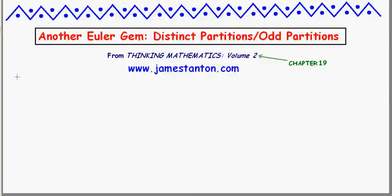G'day. In 1740, French mathematician Naudet wrote to Euler — the famous Leonard Euler — about a problem he was just playing around with. Naudet was playing around with number theory, and he asked the following question.